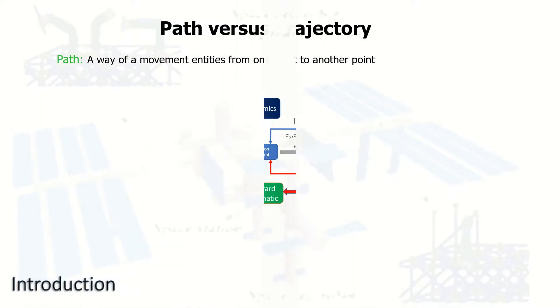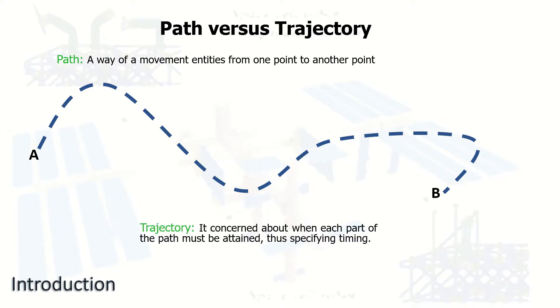The difference between path and trajectory terms in robotics: the path is the way of movement of the entities or the robot from one point to another point. Let's say we have point A to point B, so we have a certain path. But for the trajectory, it's concerned about each part of the path which we can cluster by the time.